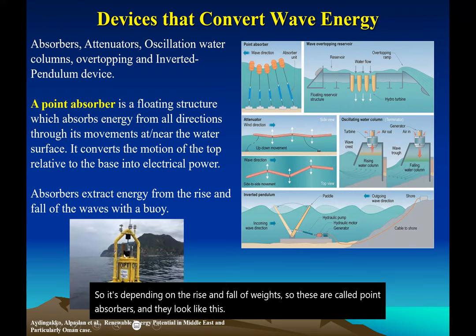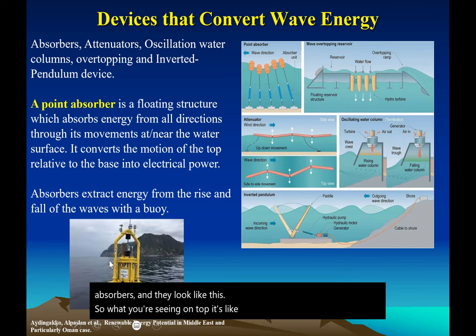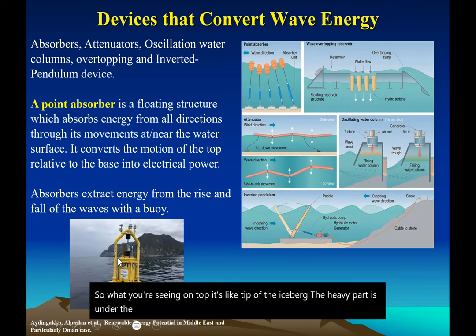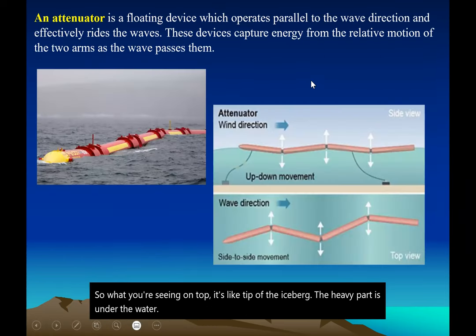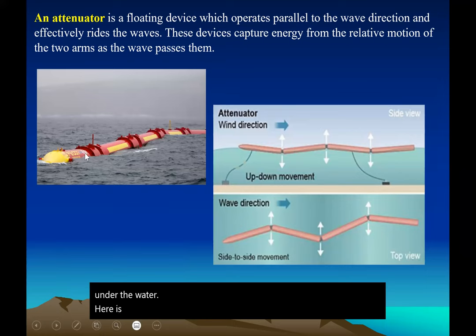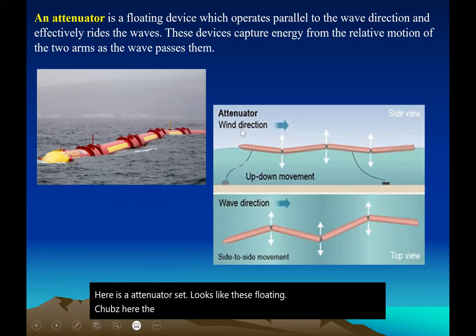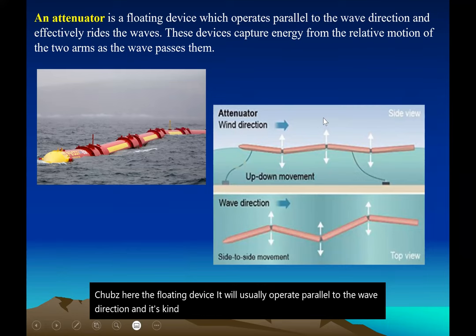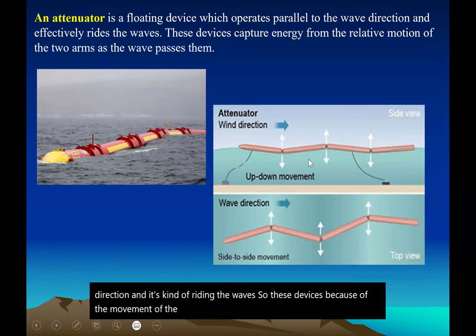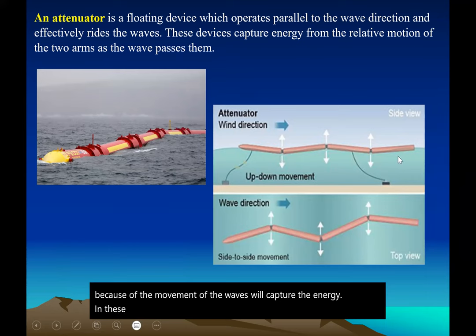What you see on top of a point absorber is like the tip of an iceberg — the heavy part is under the water. An attenuator looks like floating tubes or a floating device. It usually operates parallel to the wave direction, riding the waves. These devices capture energy in their arms as the wave passes through them due to the movement of the waves.